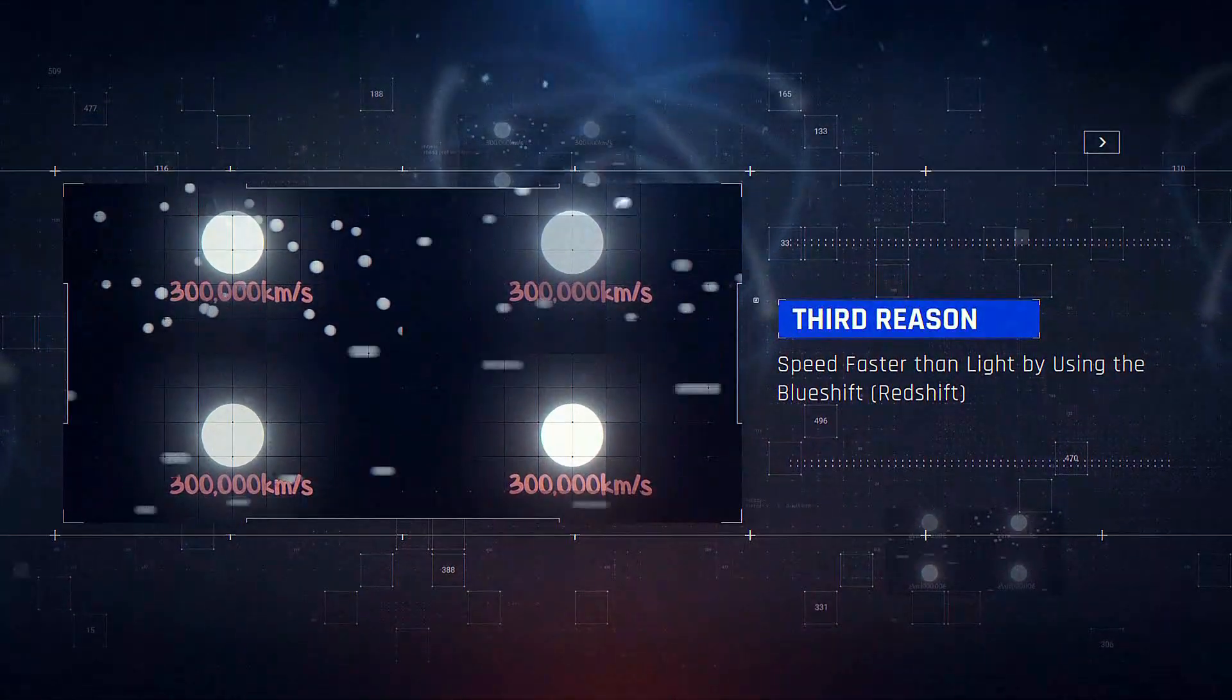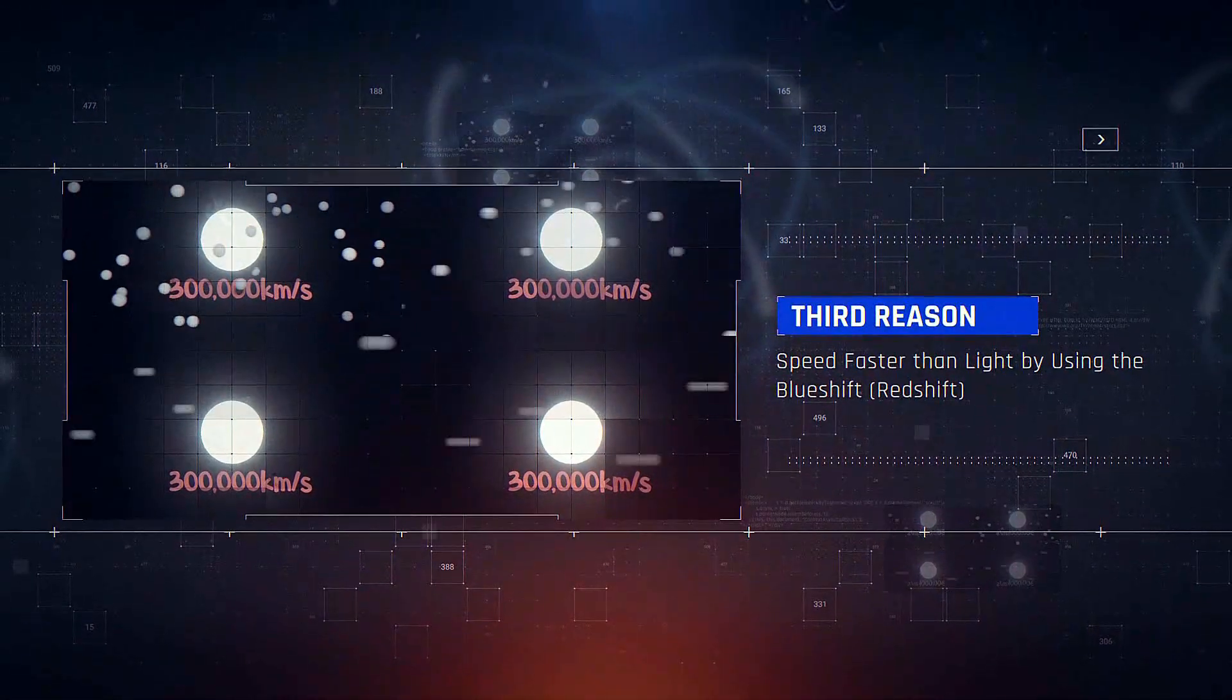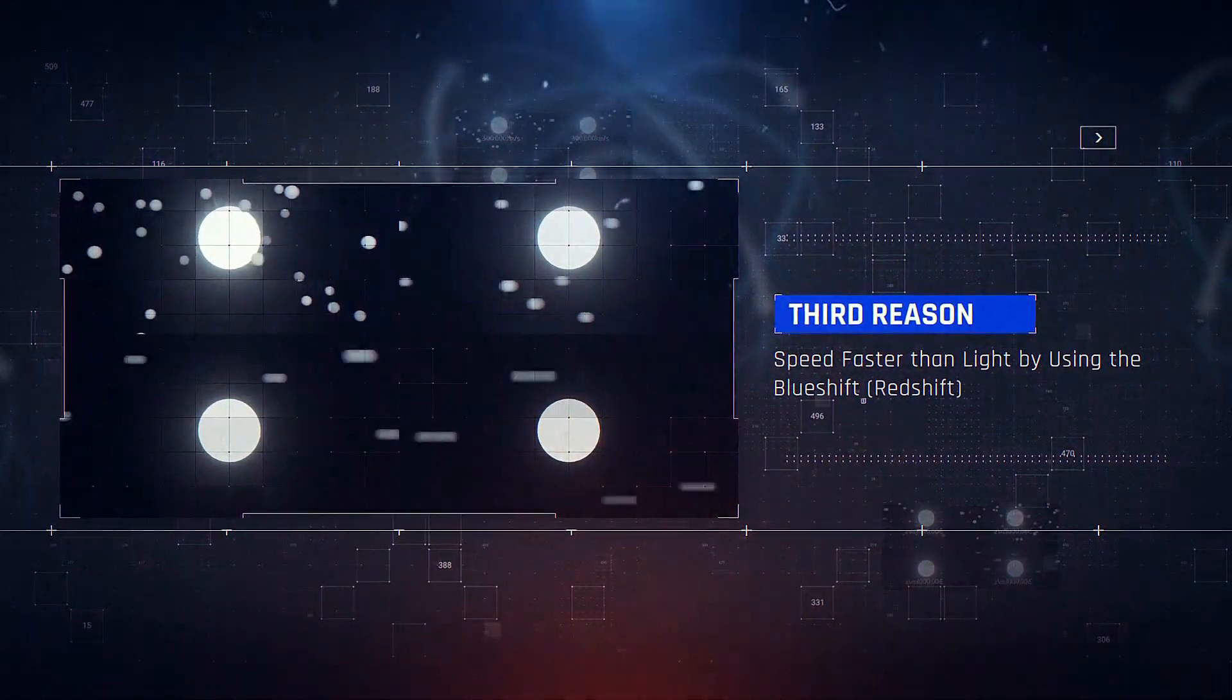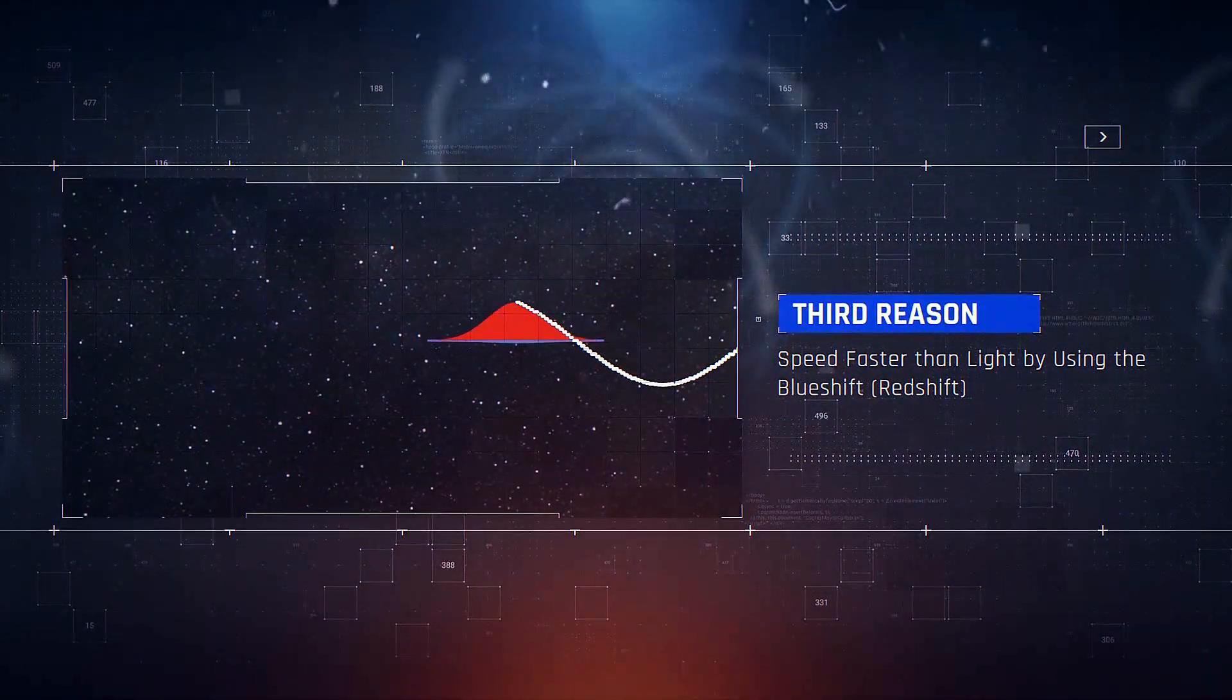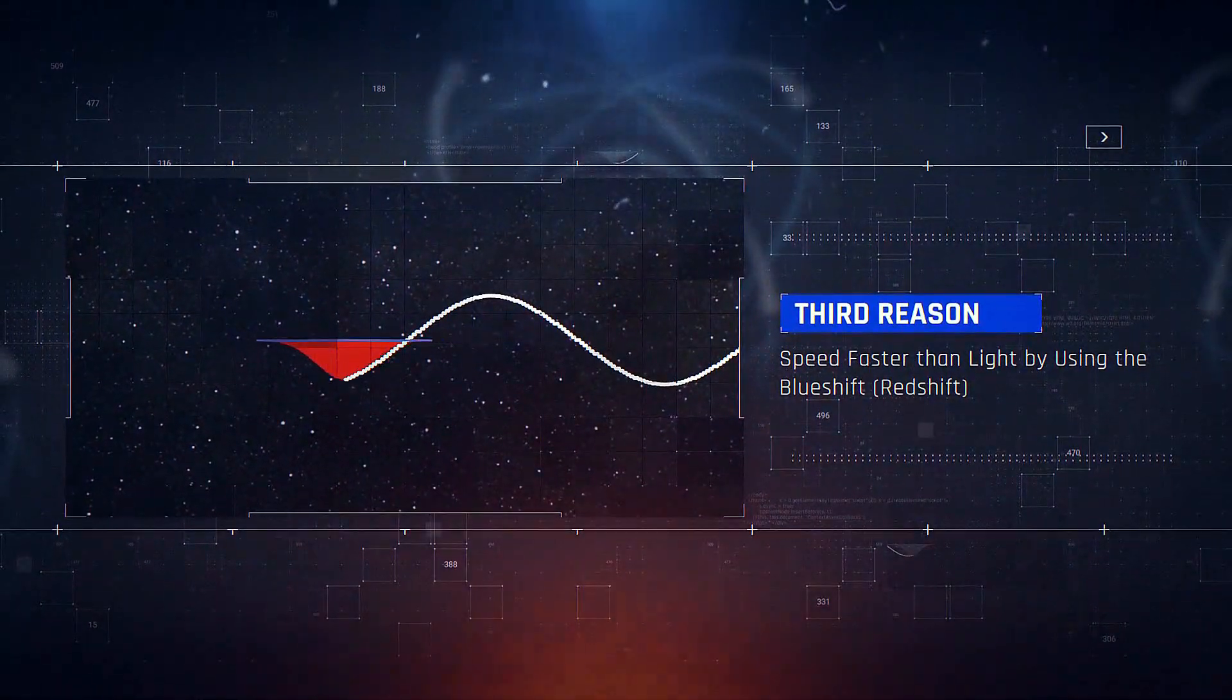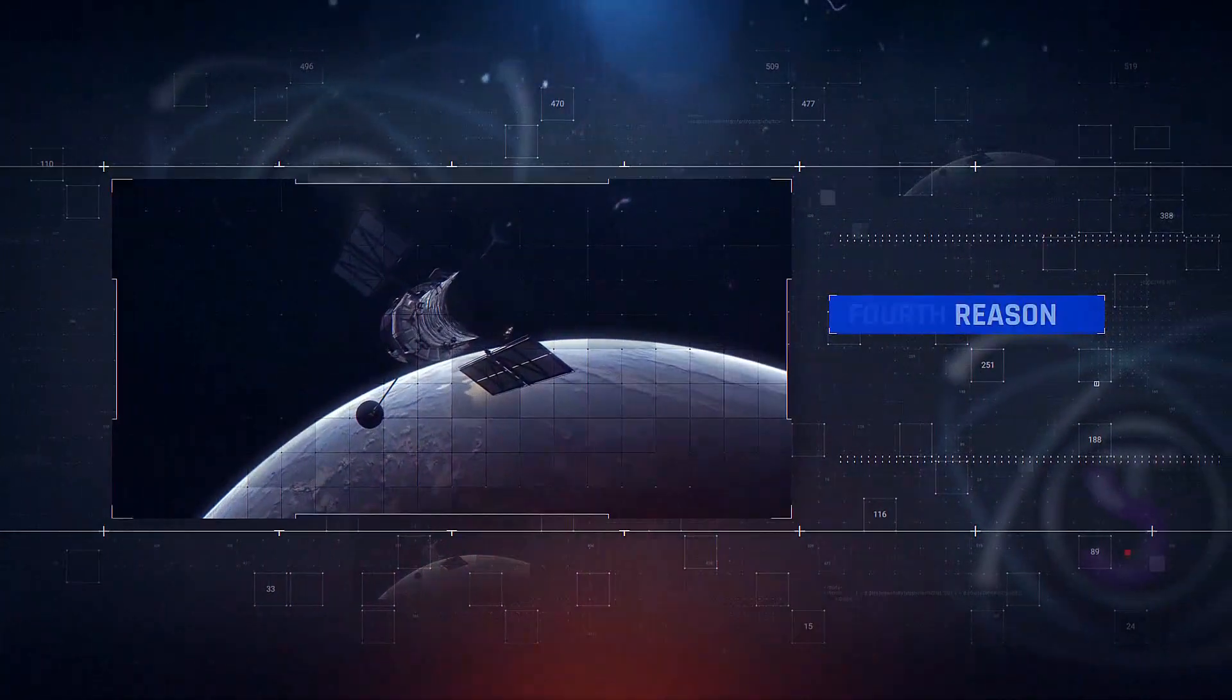3. Speed faster than light by using the blue shift or red shift. According to calculations performed on the blue shift and red shift, the blue shift phenomenon can only happen when the light of galaxies meets speed faster than light.